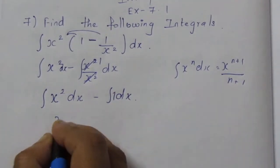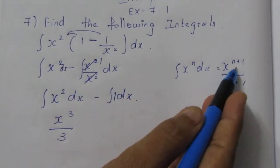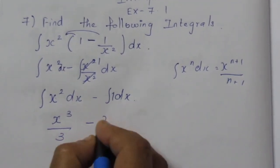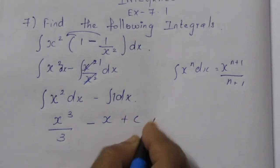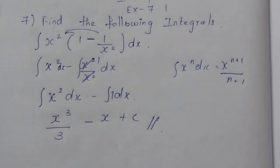So this becomes x³/3 because the power will be increased by 1, the same power will come in the denominator, minus x plus C. This is your final answer for the problem. That is all. Thank you.